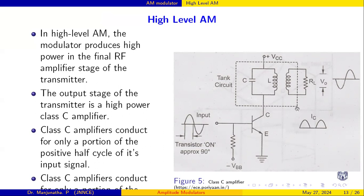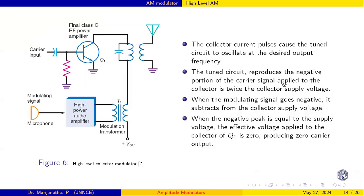During the positive cycle, the capacitor is fully charged. When the negative cycle comes and the transistor is switched off, the capacitor starts discharging, which produces the negative cycle in the output. This is how the Class C amplifier works, and the same principle applies to our high-level amplitude modulator.